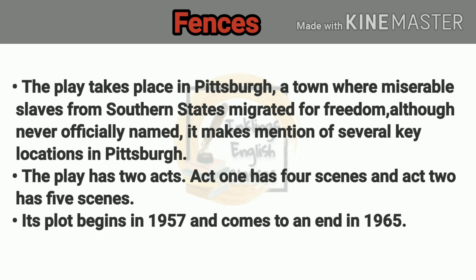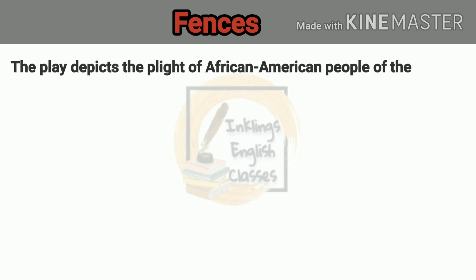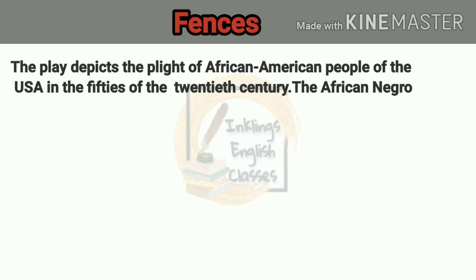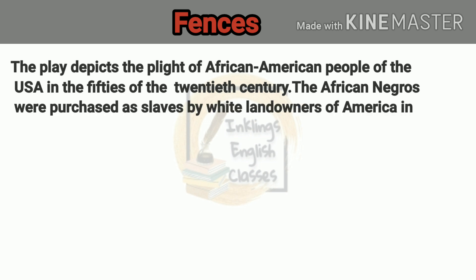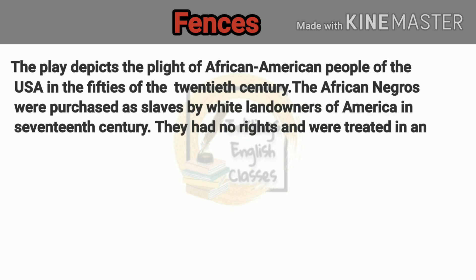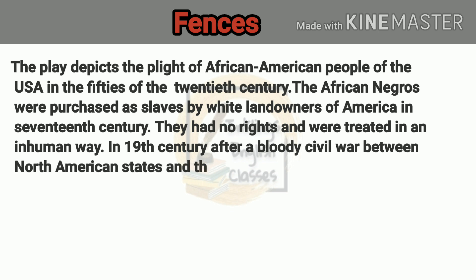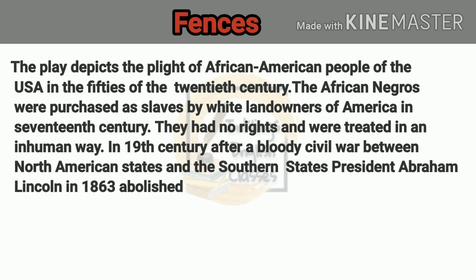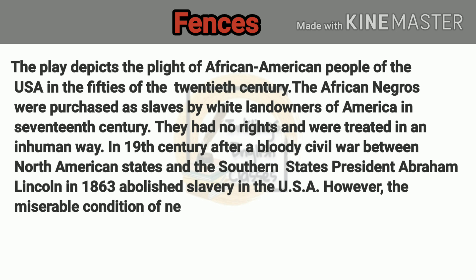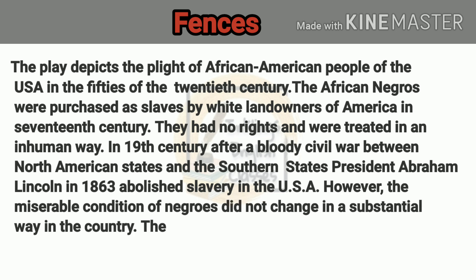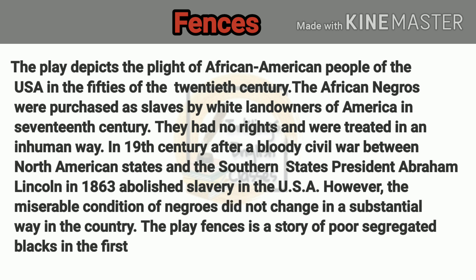इस play के plot की beginning 1957 में होती है और इसका end 1965 में होता है। इस play के ज़रिये August Wilson ने 20वीं सदी के 50 के दशक के दौरान USA में African American लोगों की दशा को दिखाने की कोशिश की है। 17वीं century में White Land Owners African Negroes को खरीद कर अपने farms में गुलाम बनाकर काम करवाने के लिए लाते थे।